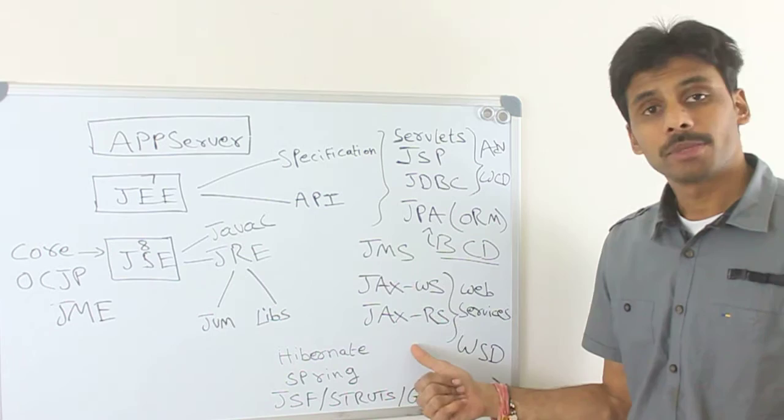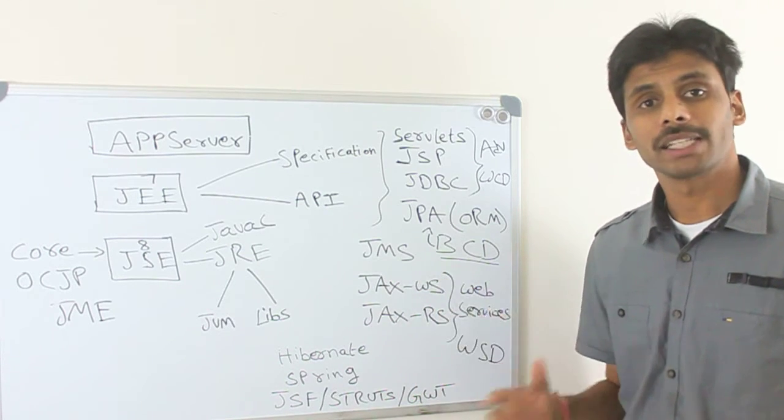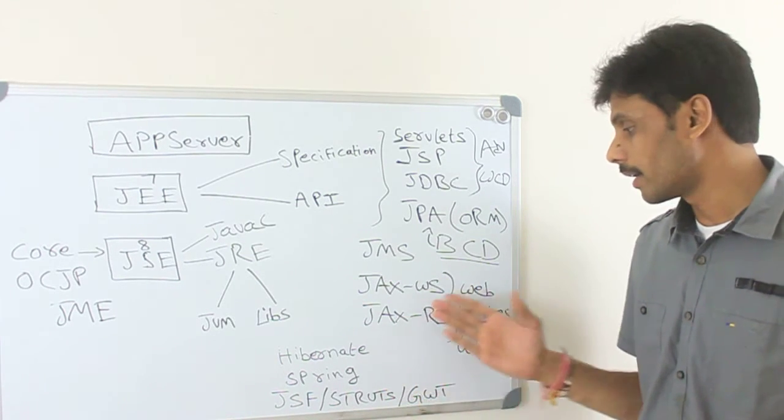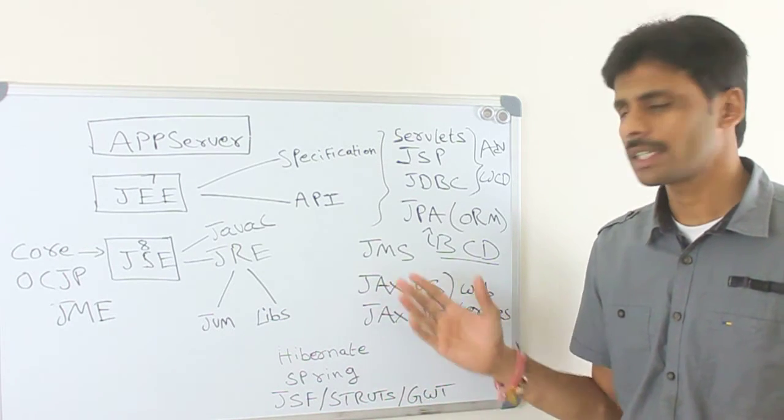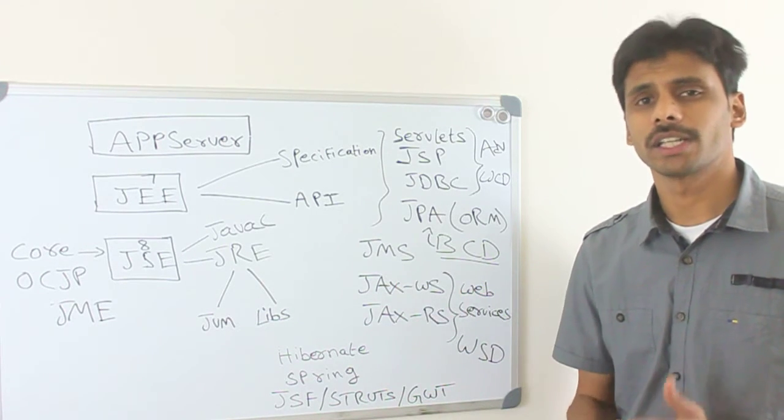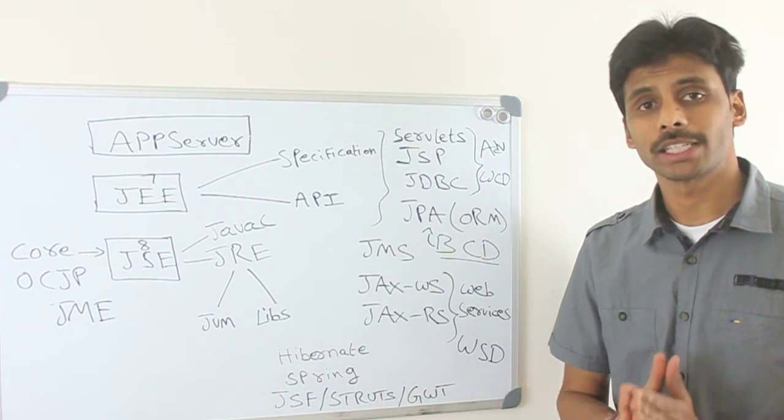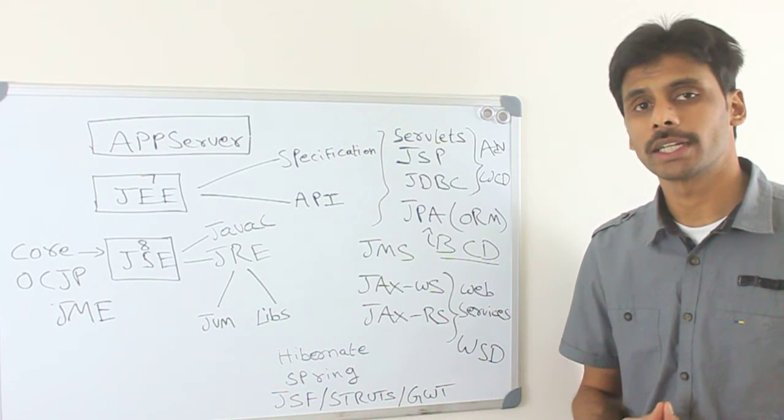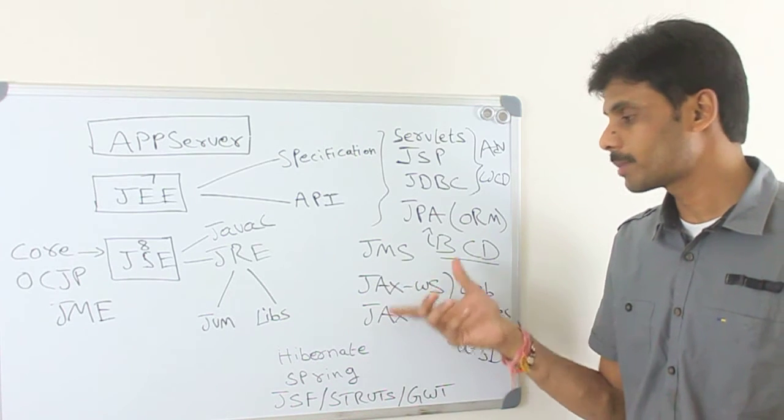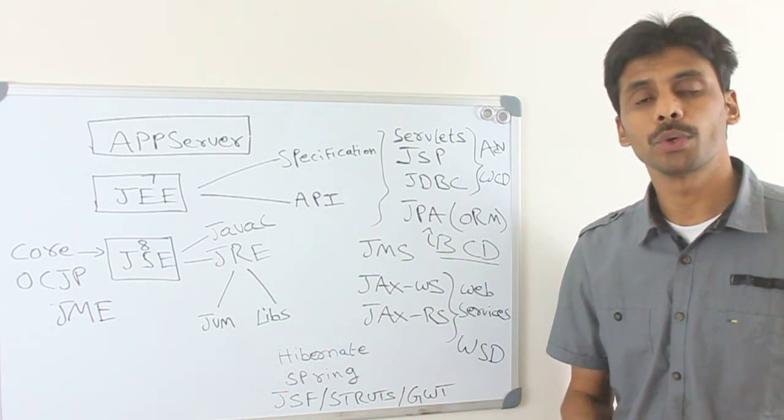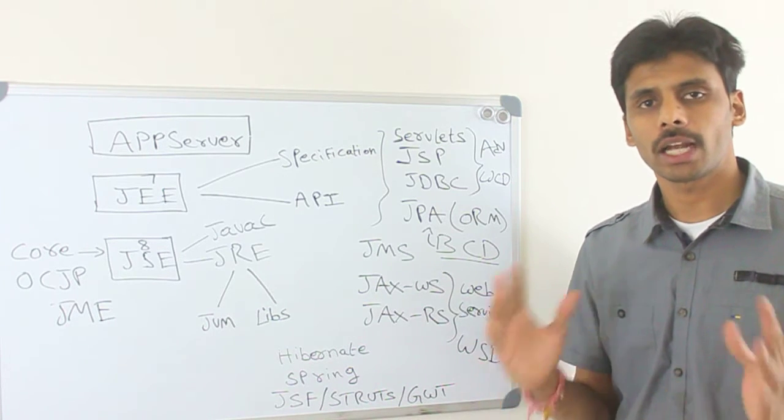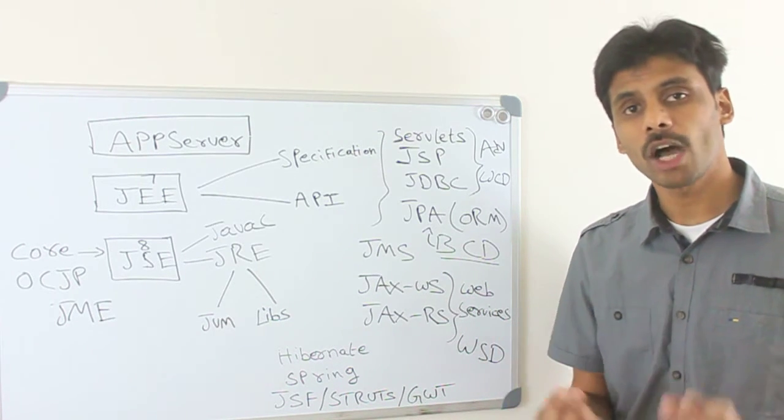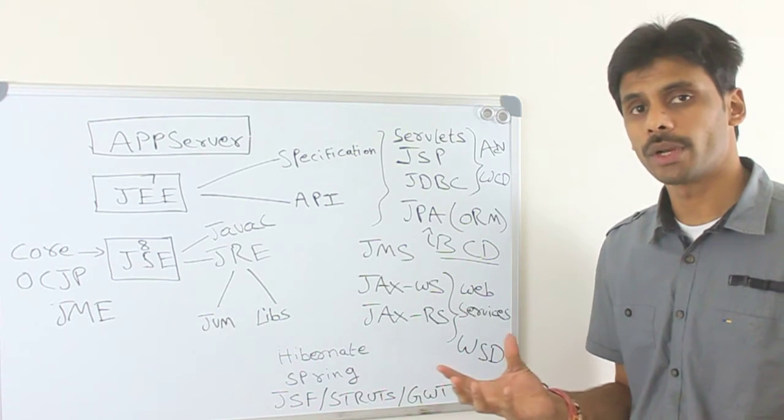Then comes JMS and web services. JMS stands for Java Messaging Services and web services. They both solve similar problems. JMS provides asynchronous communication, persistence and all that. I will talk about that in detail later. But these two, web services and JMS, will allow you to build loosely coupled applications. Your applications can communicate with each other easily or the various components within your application can communicate easily.